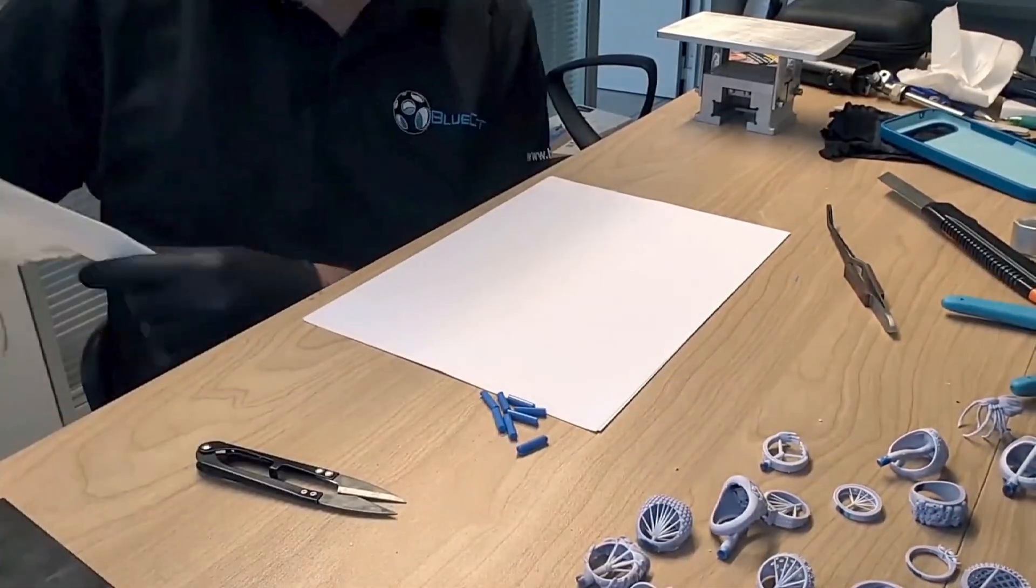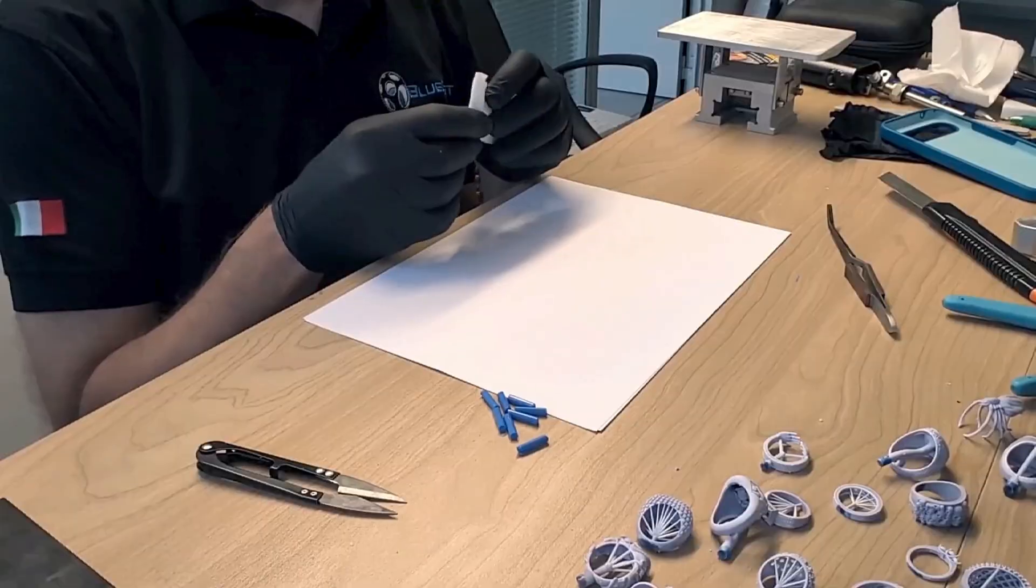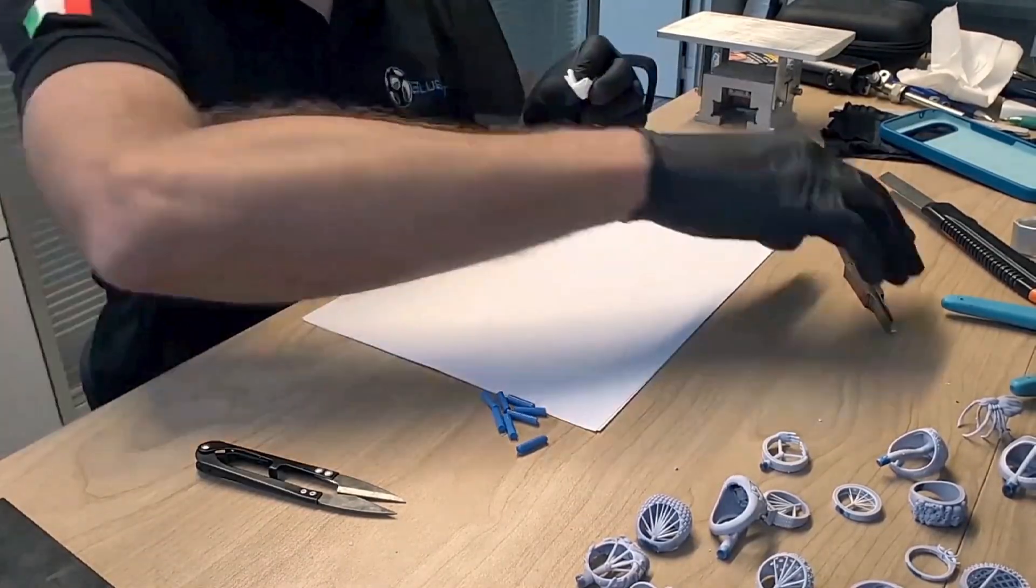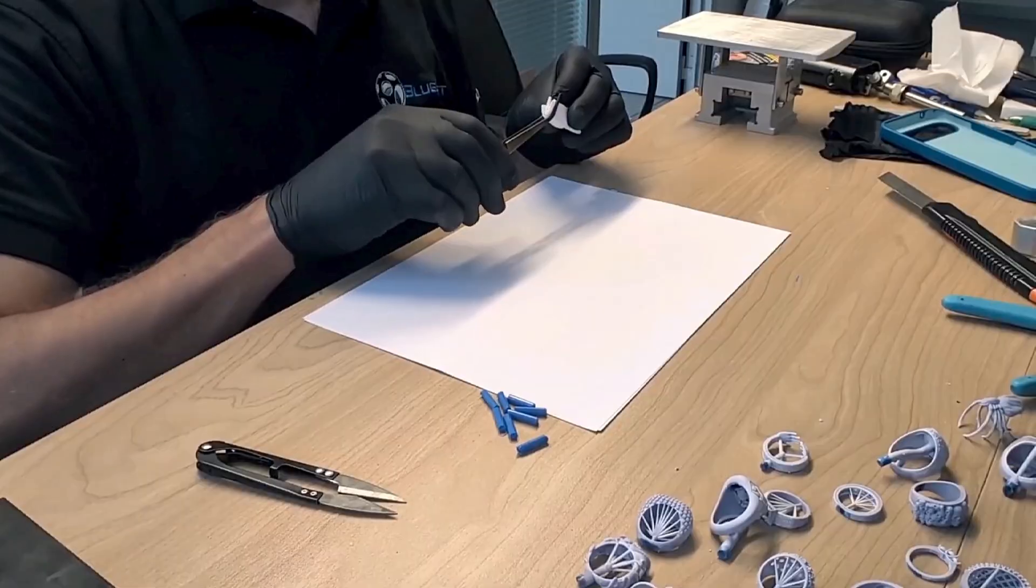Thanks to the preliminary steps, welding the wax rods to the castable resin models is now exactly like welding them to wax rings. I recommend smoothing the contact points and creating precise welds.